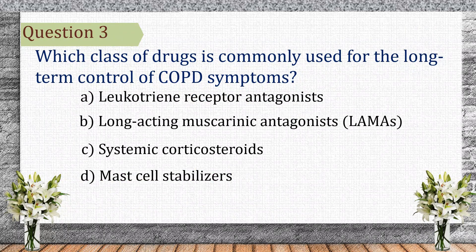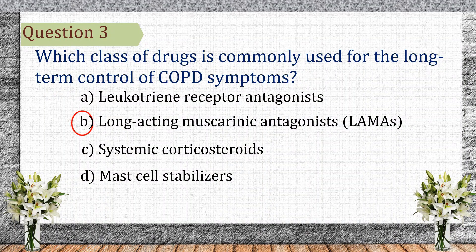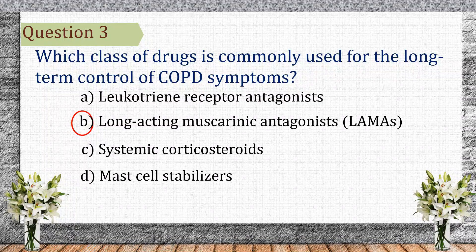Question 3. Which class of drugs is commonly used for long-term control of COPD symptoms? The correct answer is B: long-acting muscarinic antagonists. Long-acting muscarinic antagonists, like tiotropium, block muscarinic receptors, reducing bronchoconstriction and improving airflow in COPD.